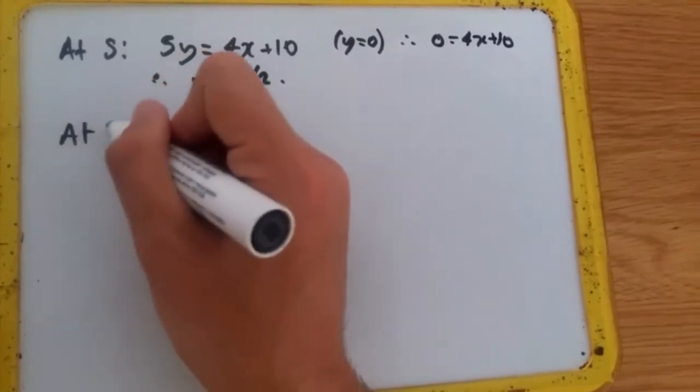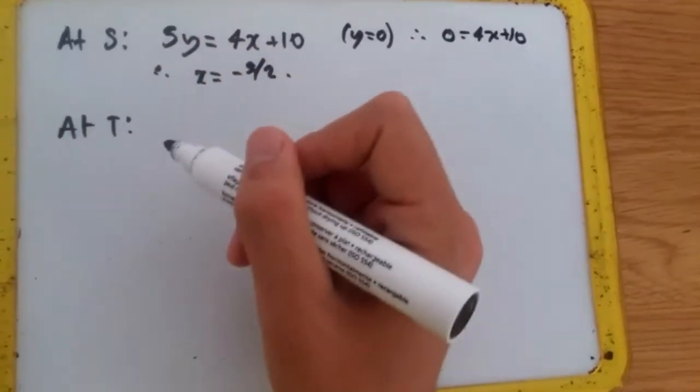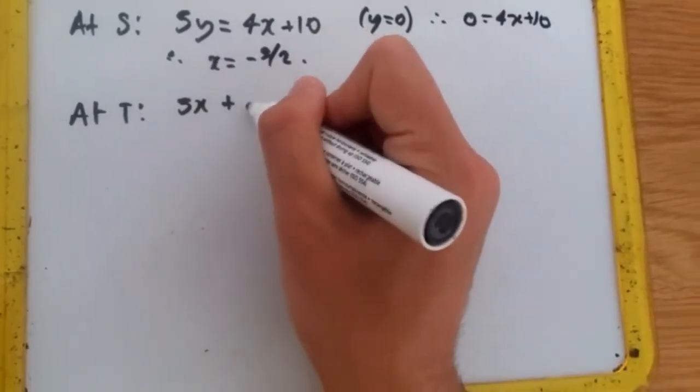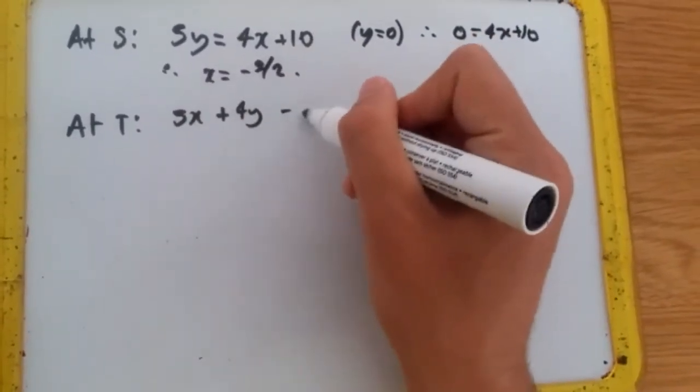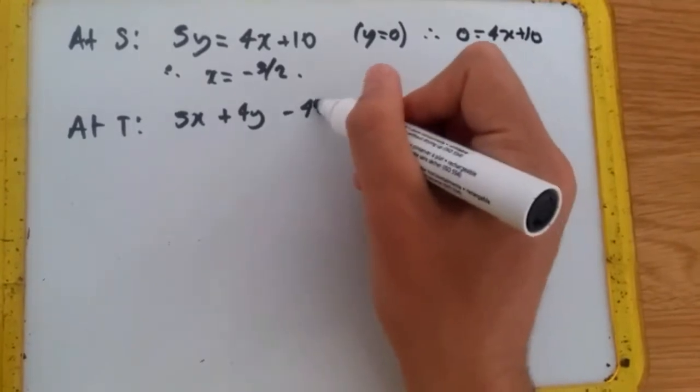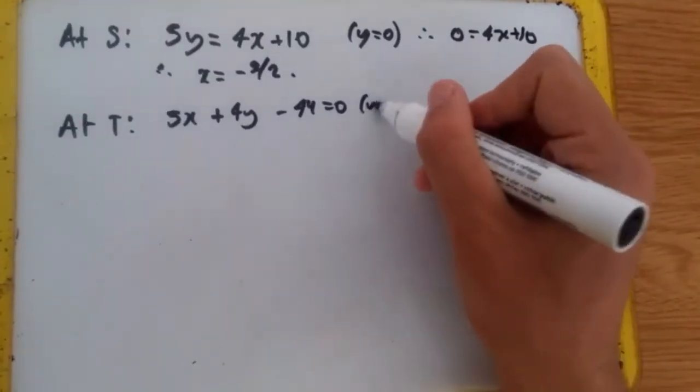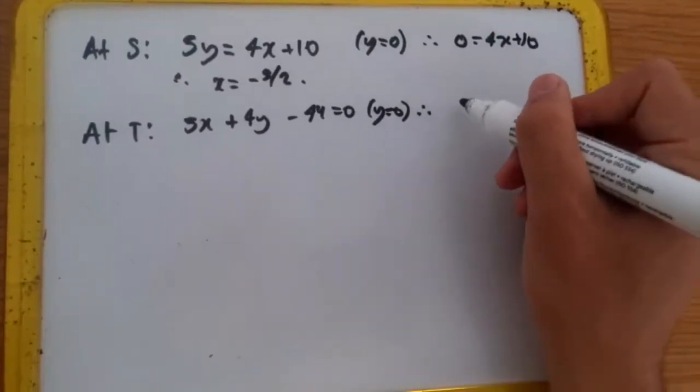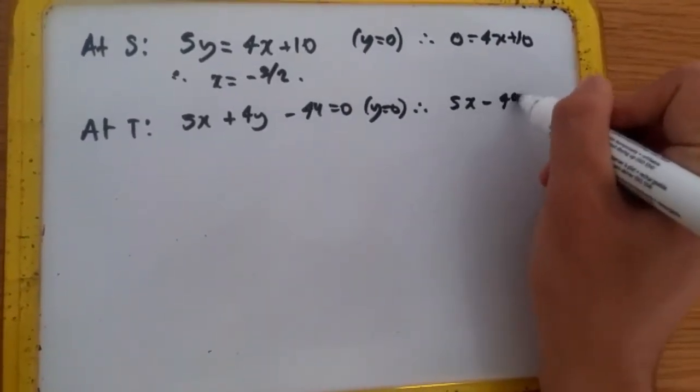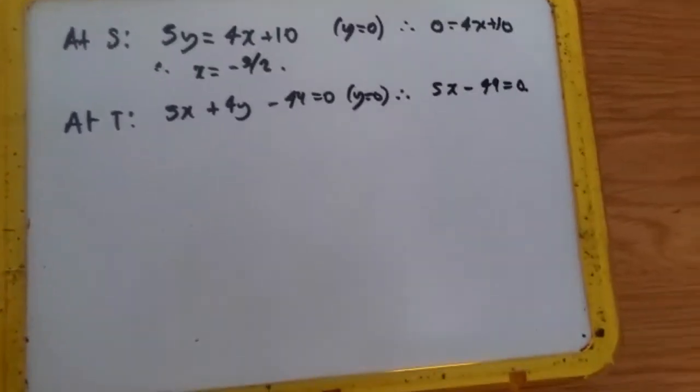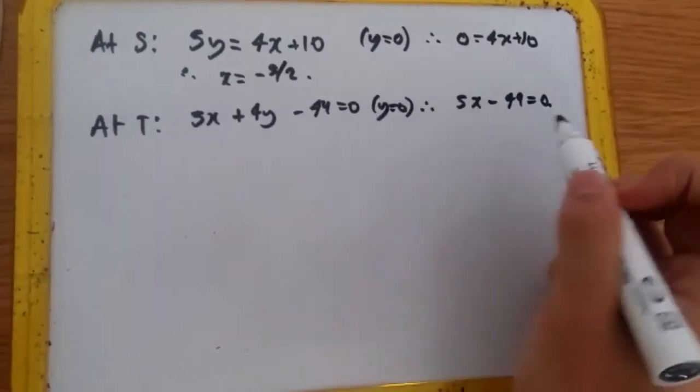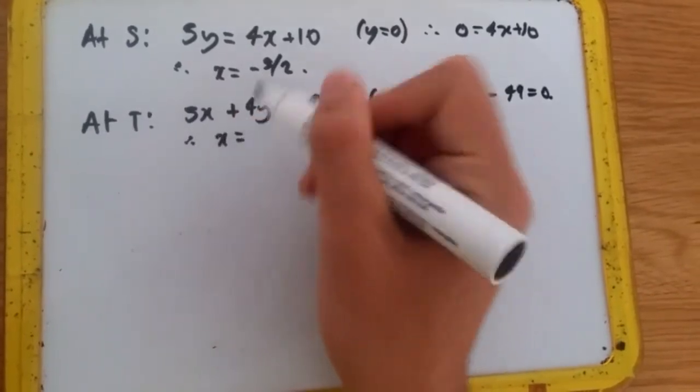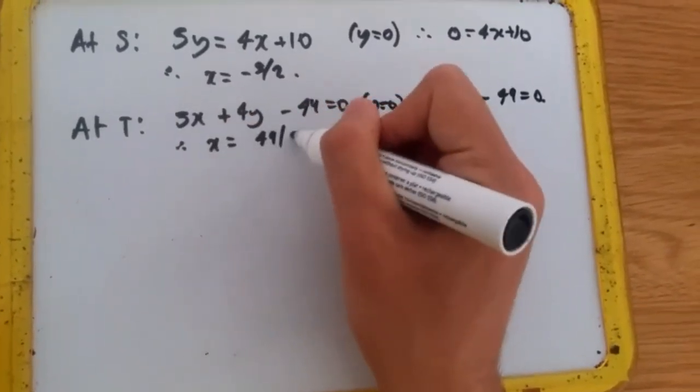Again, let's do it according to T. According to T, we're going to use the other equation which is 5x + 4y - 49 = 0. Again, setting y = 0, we have 5x - 49 = 0. Simple linear equation. Rearranging, plus 49 divided by 5 immediately tells us that x = 49/5.